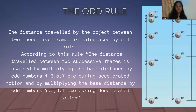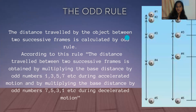Now let us come to our topic, that is the odd rule. The odd rule is used to calculate the distance traveled by an object between two successive frames.